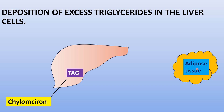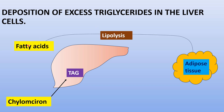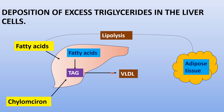Adipose tissue has stored triacylglycerol which undergoes lipolysis to form fatty acids. These fatty acids enter the liver and form triacylglycerol. Triacylglycerol formed from chylomicrons and fatty acids in the liver is excreted out in the form of VLDL, which is transferred to the peripheral tissue. This is the normal condition.